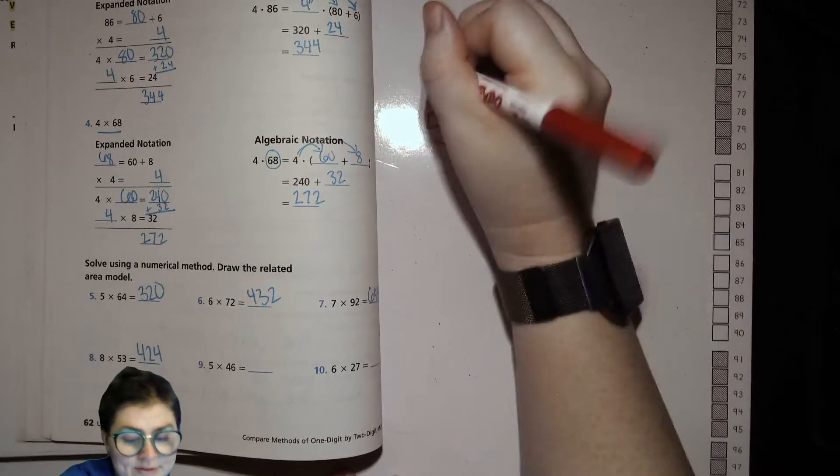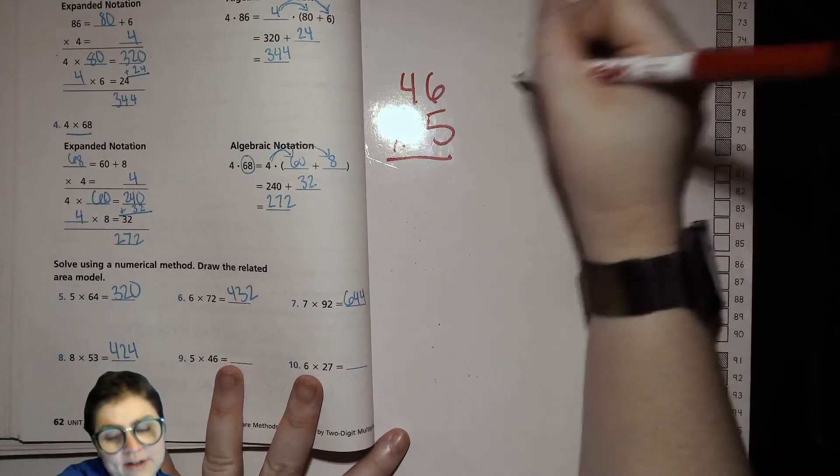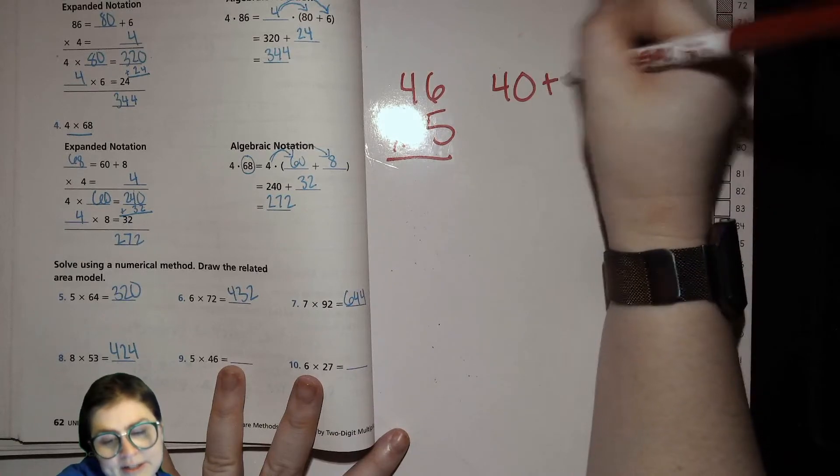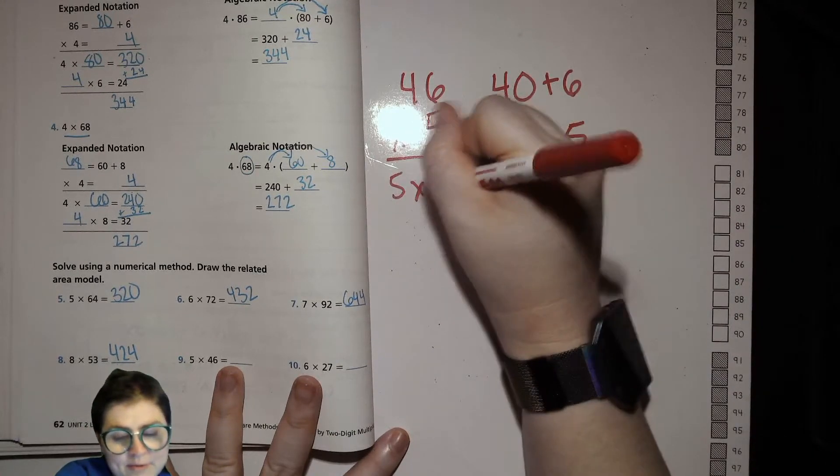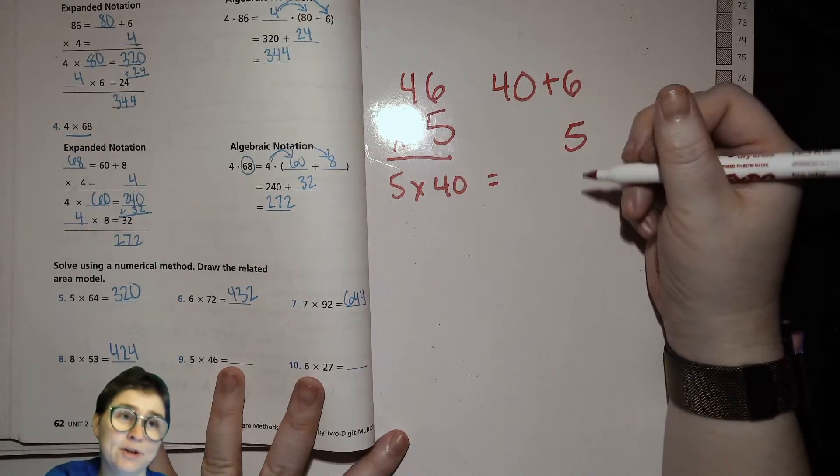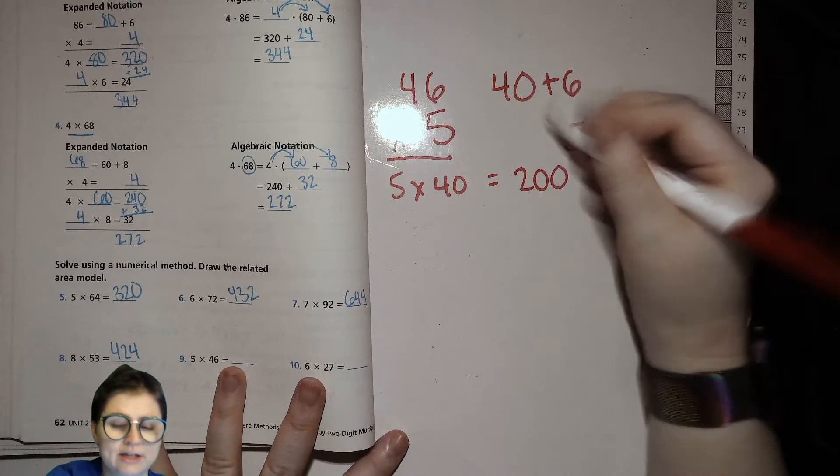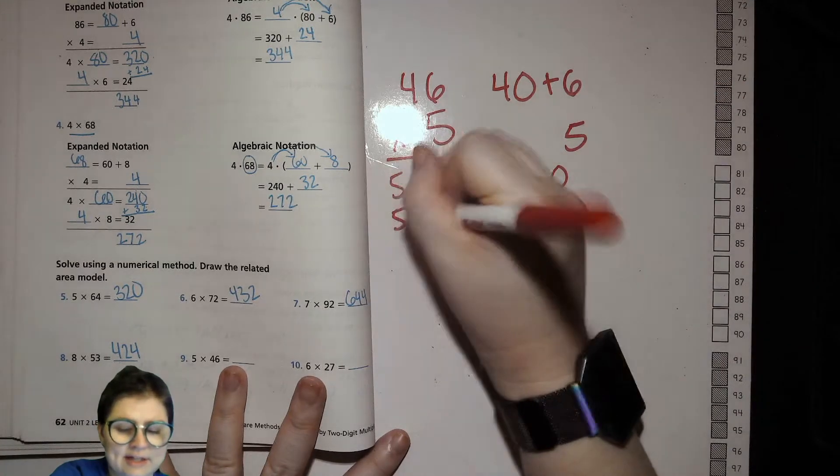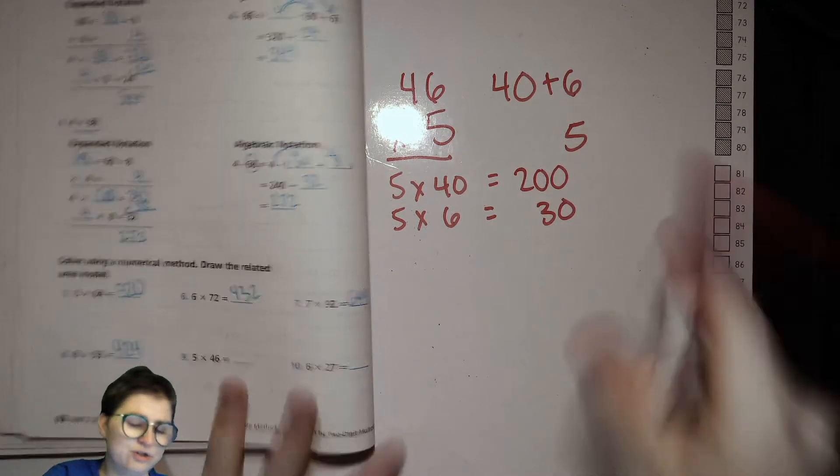Let's do the 46 times 5. So 40 plus 6, 5. 5 times 40. Well, what's 5 times 4? 20, right. So then 20 tens, 200. 5 times 6, 30. 230.